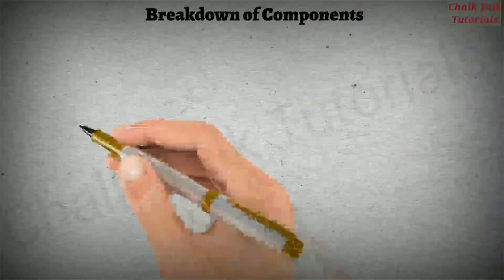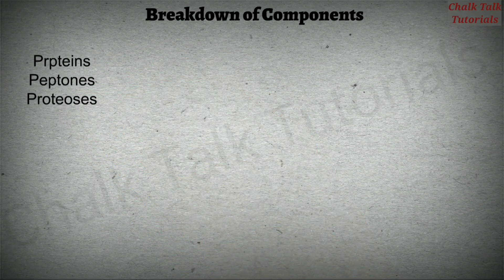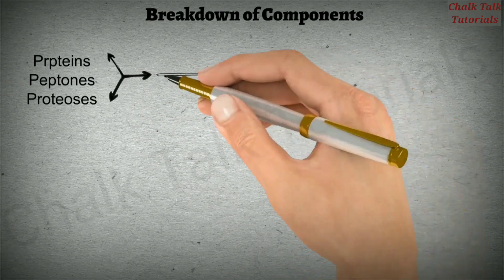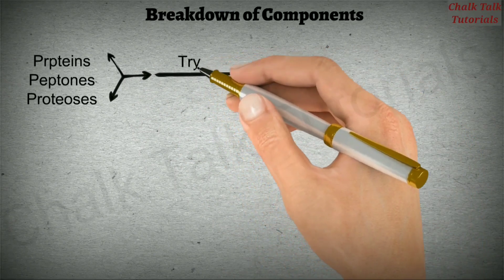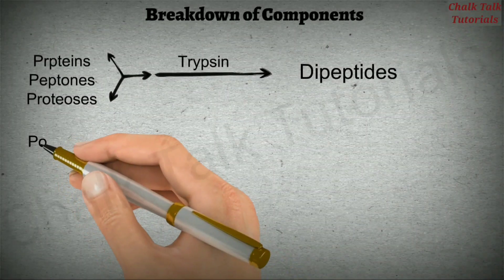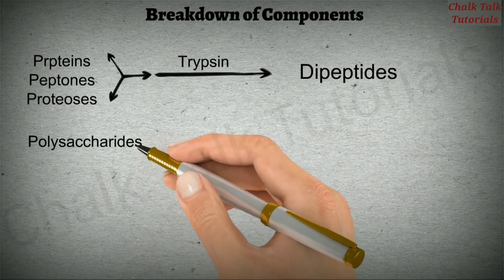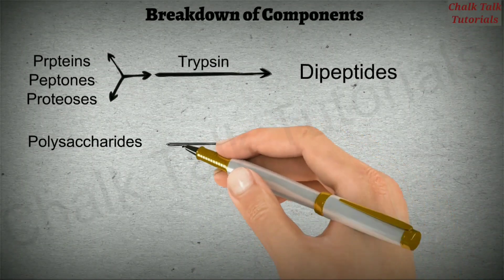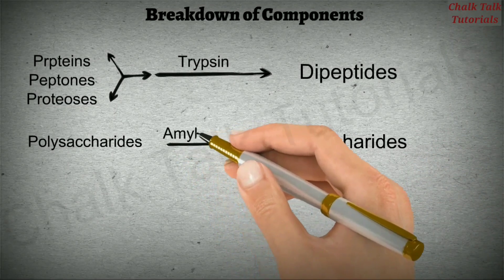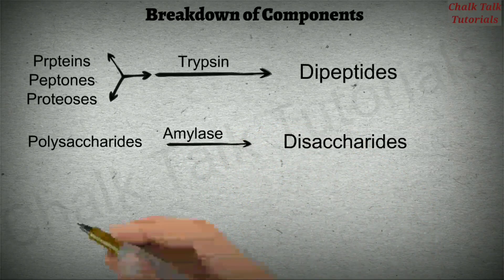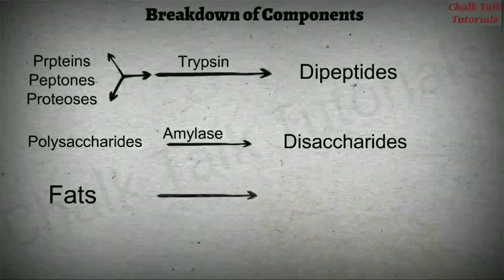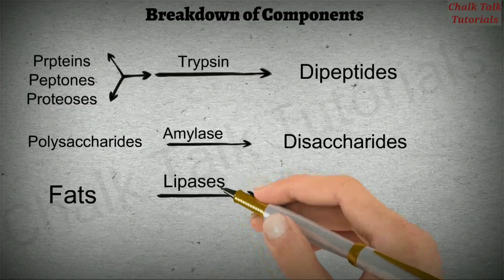In the breakdown of different food components: proteins, peptons, and proteases are digested into dipeptides with the help of enzyme trypsin. Polysaccharides, which are carbohydrates, are digested into simpler disaccharides such as maltose, sucrose, and lactose with the help of enzyme amylase. Fats and oils are digested into simpler molecules like monoglycerides with the help of enzyme lipases.